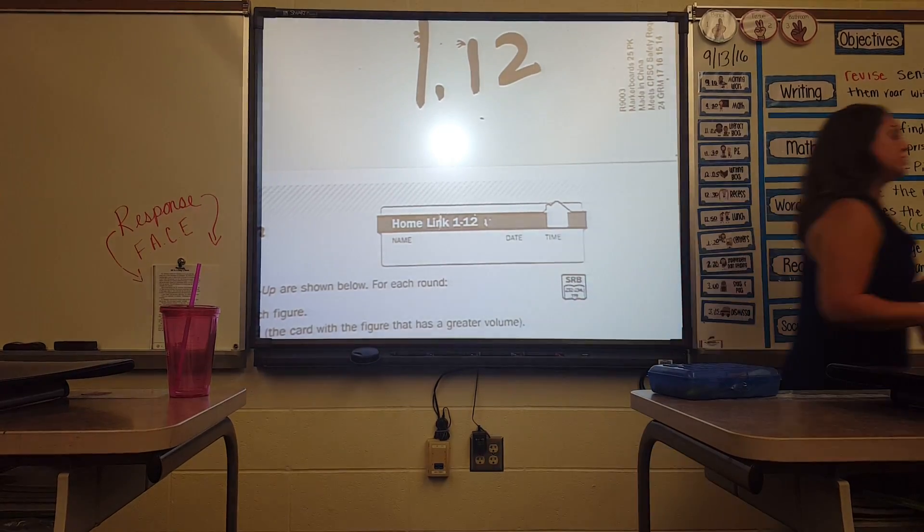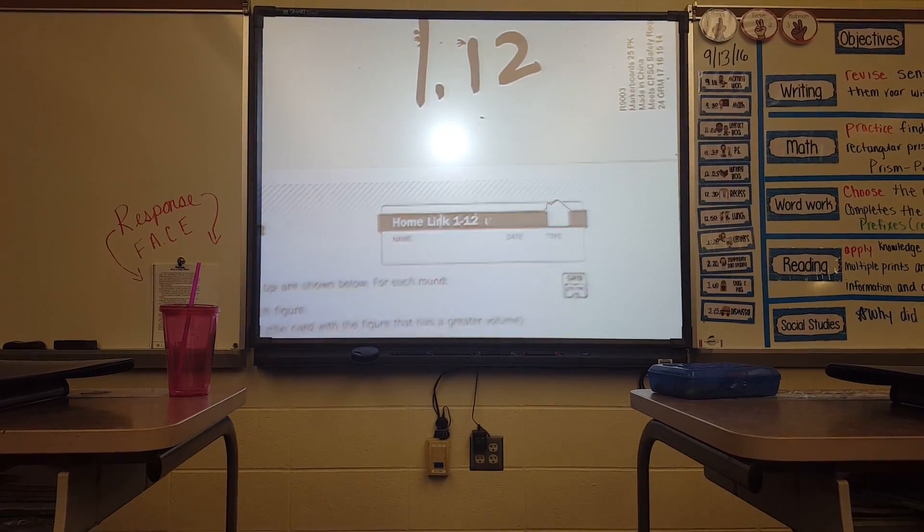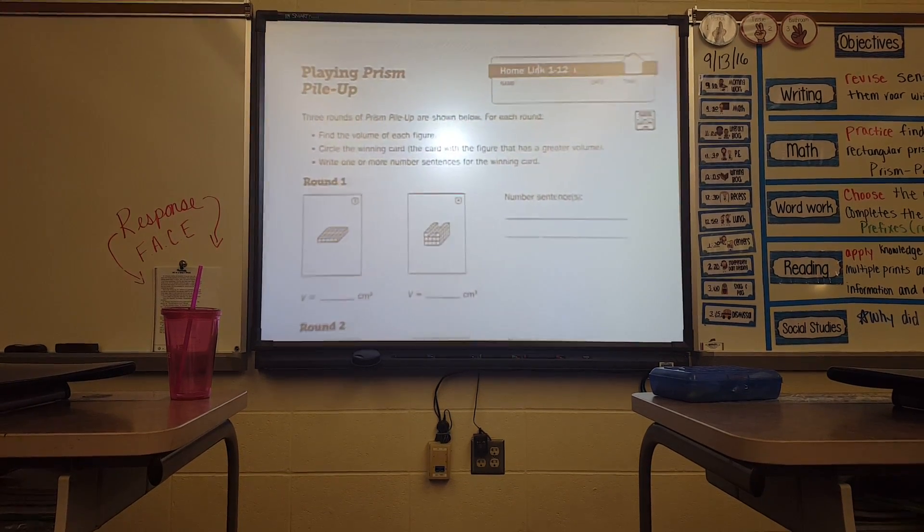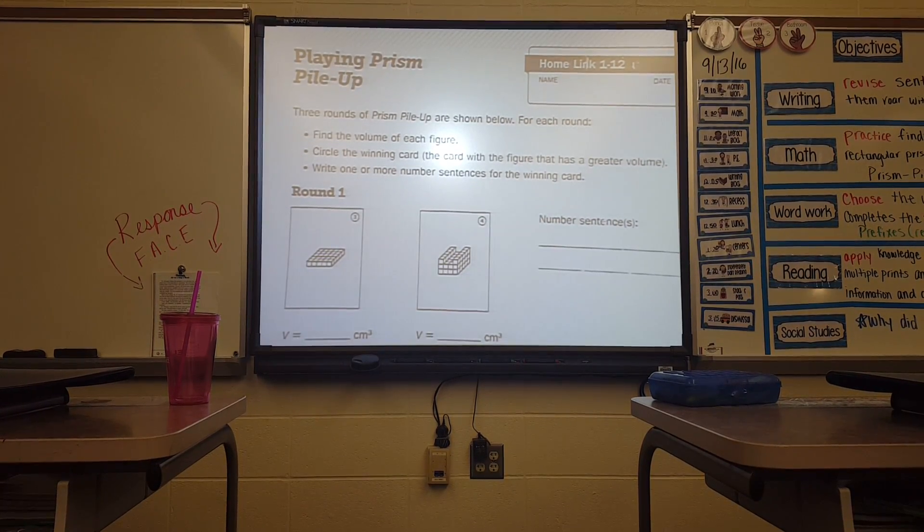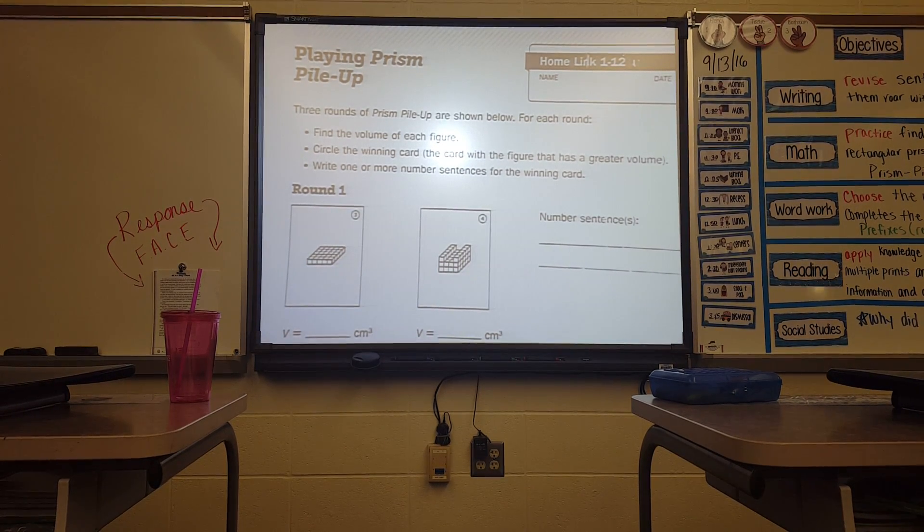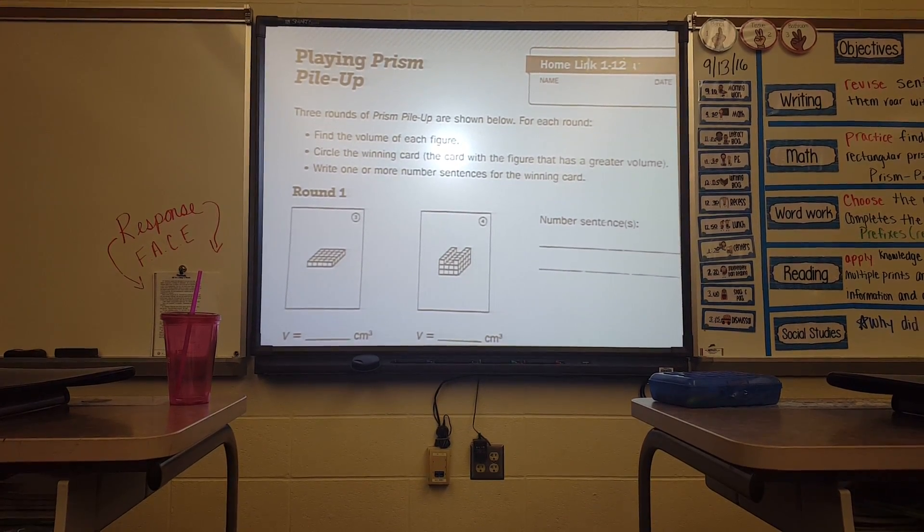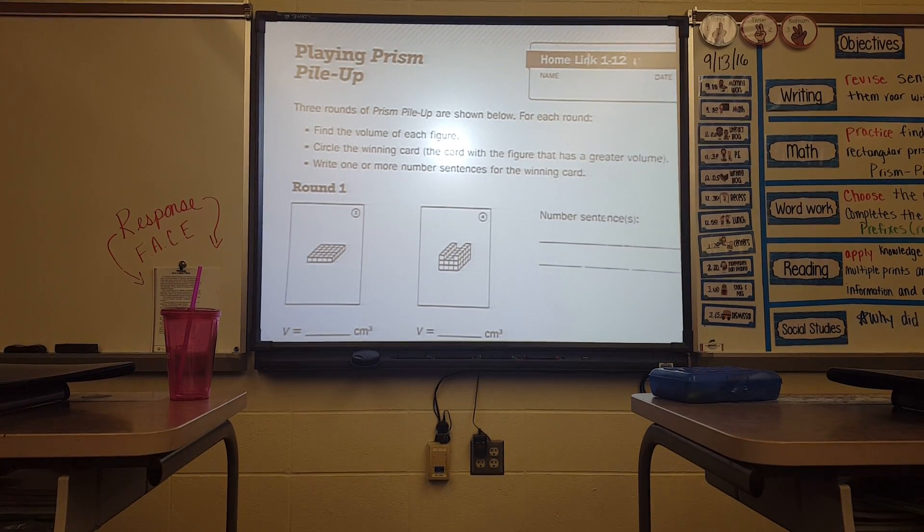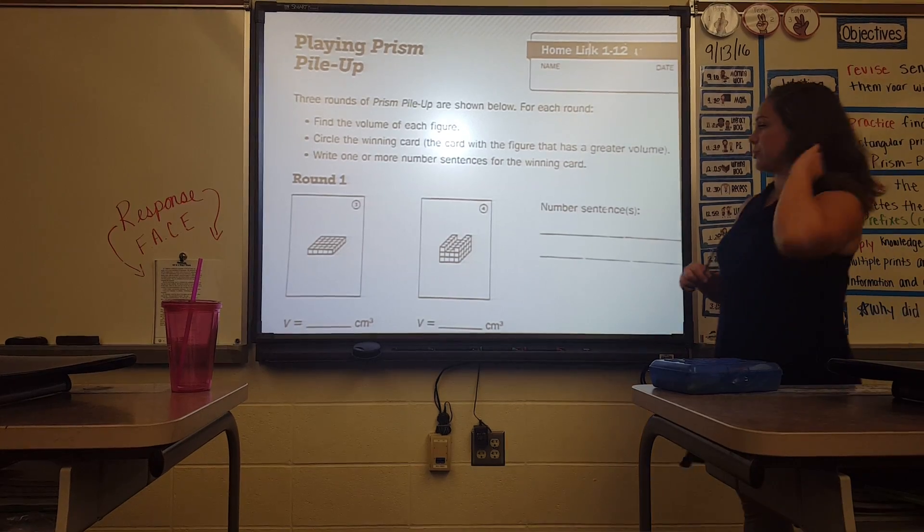So to start off, I'm going to read the directions. The directions say: find the volume of each figure, circle the winning card or the card with the figure that has the greatest volume, and then write one or two number sentences for the winning card.